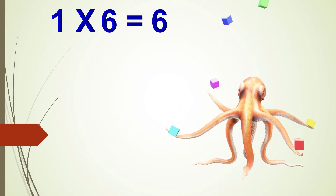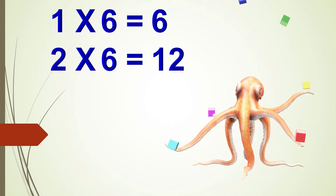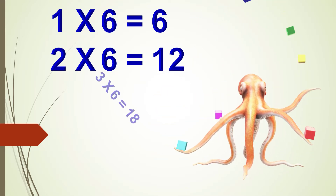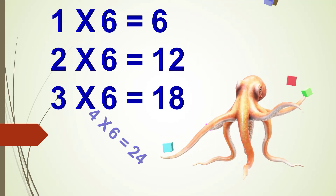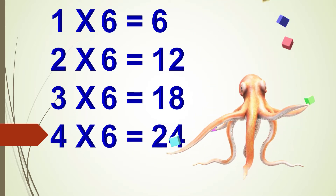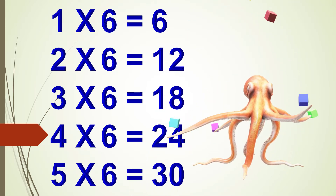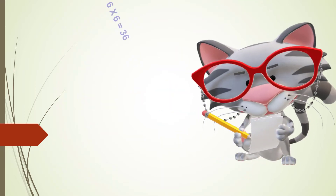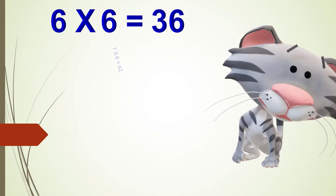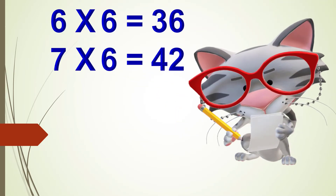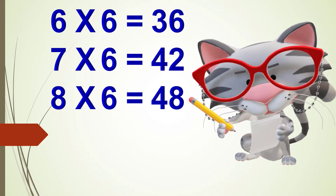One times six is six, two times six are twelve, three times six are eighteen, four times six are twenty-four, five times six are thirty, six times six are thirty-six, seven times six are forty-two.